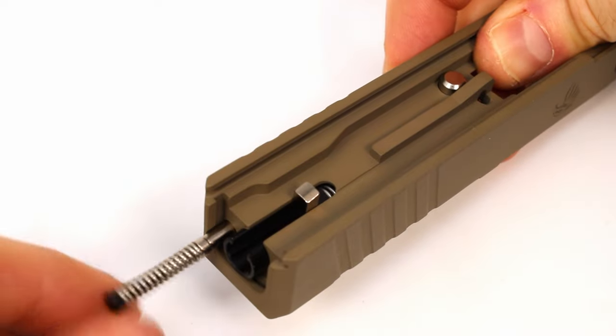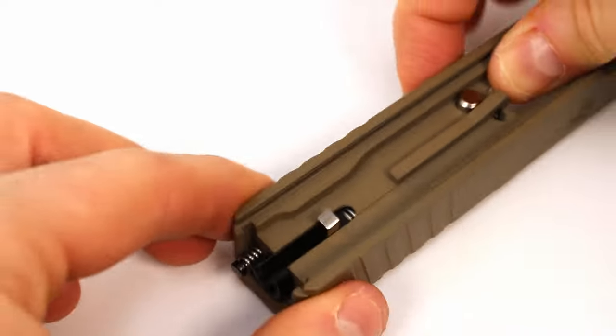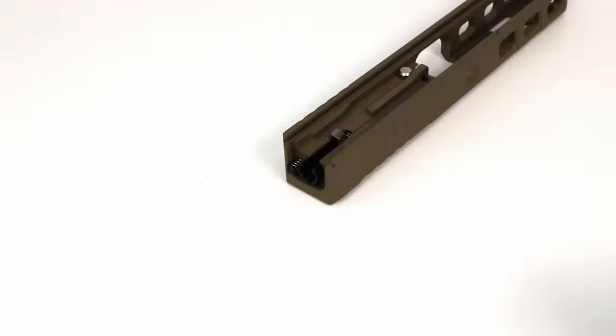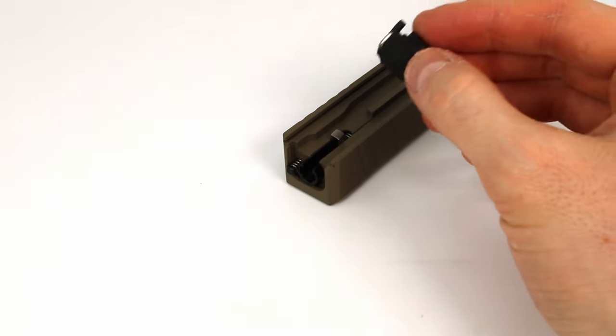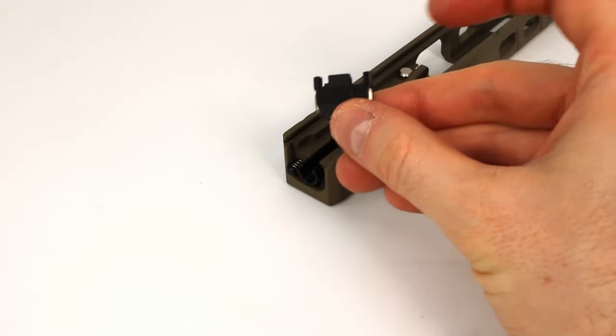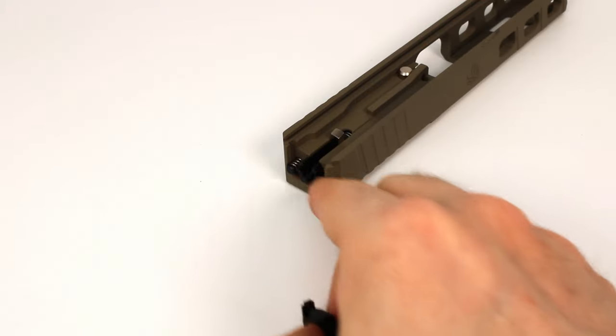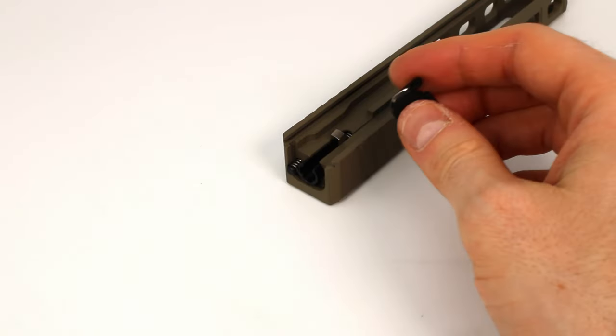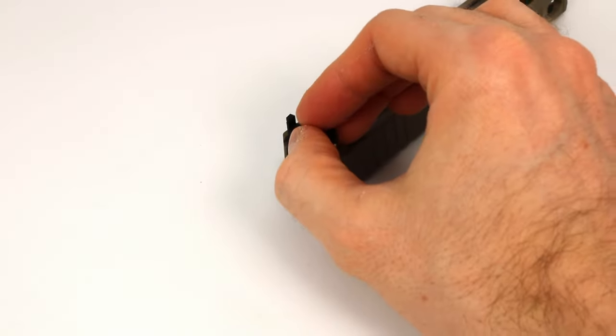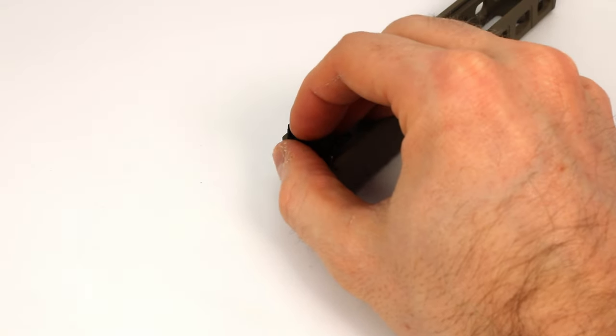Next up is the cover plate for the back of the slide. You just want to line up the metal tabs on either side of the plate with the grooves on the back of the slide right here. In order to get this to fit, you're going to have to compress the springs on the firing pin assembly and the extractor plunger.